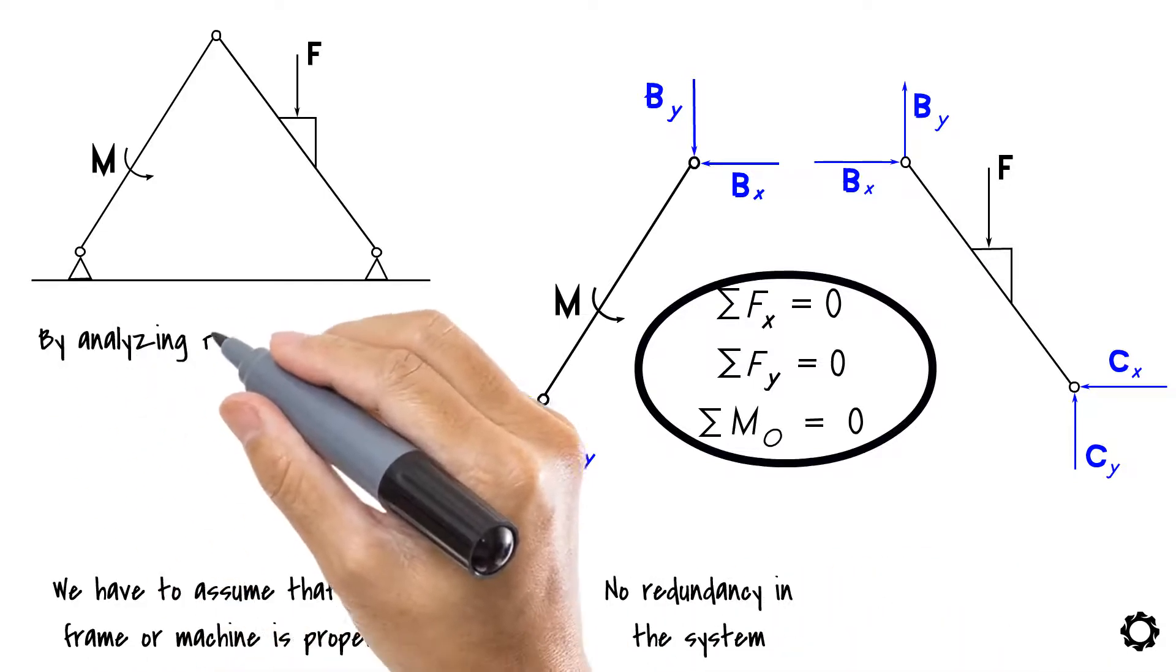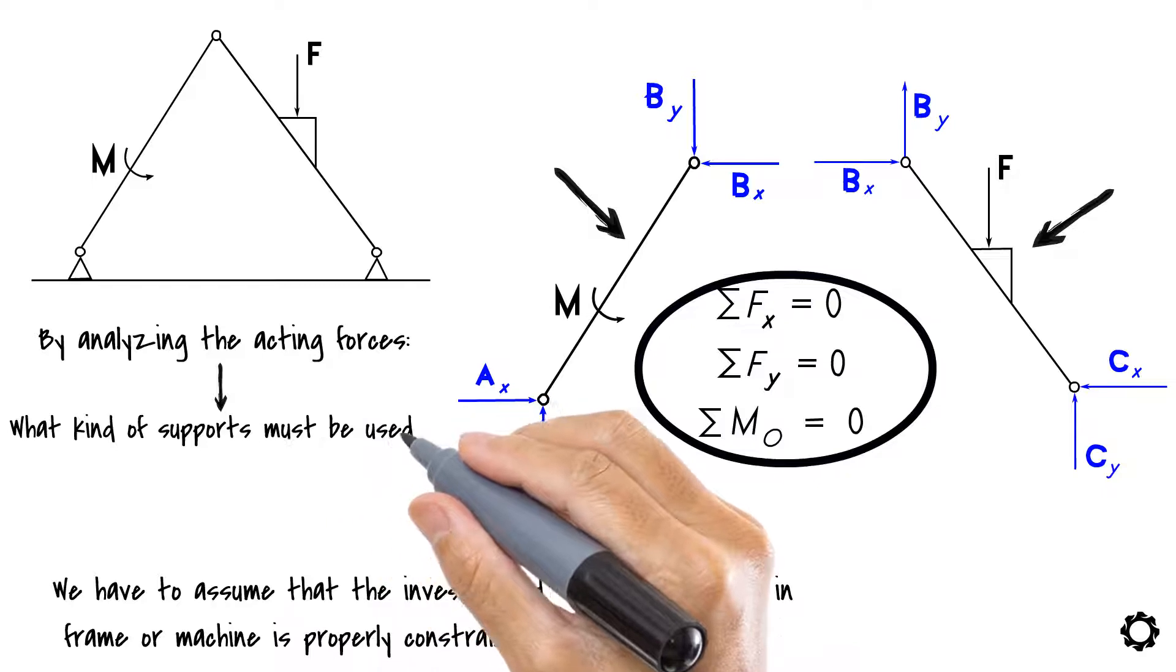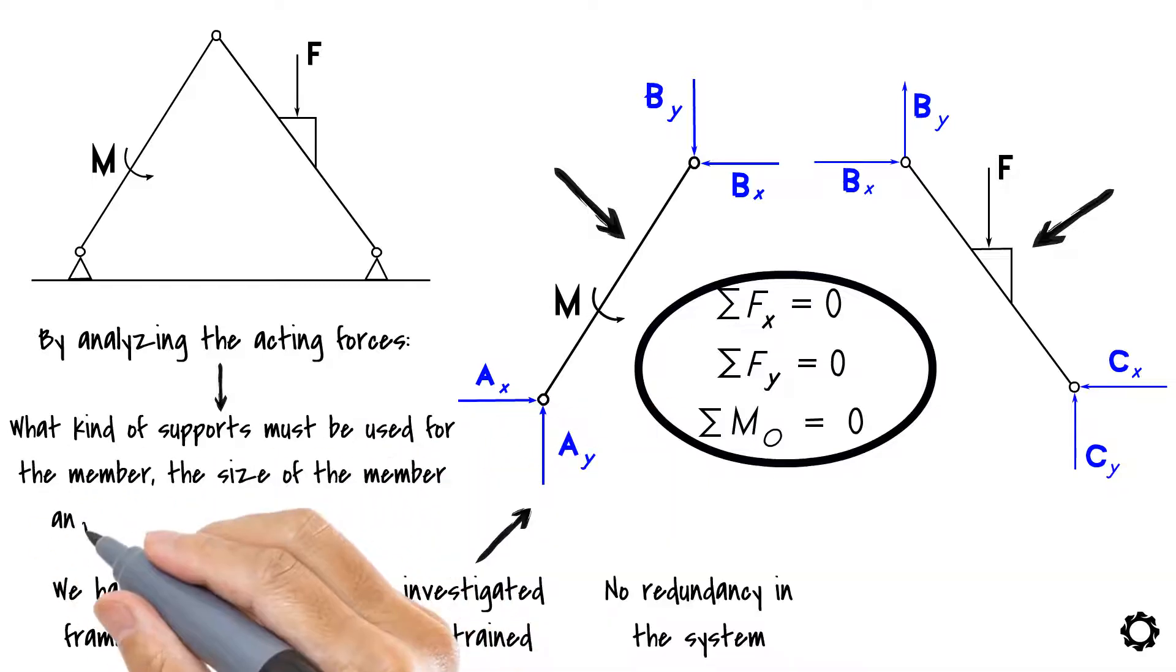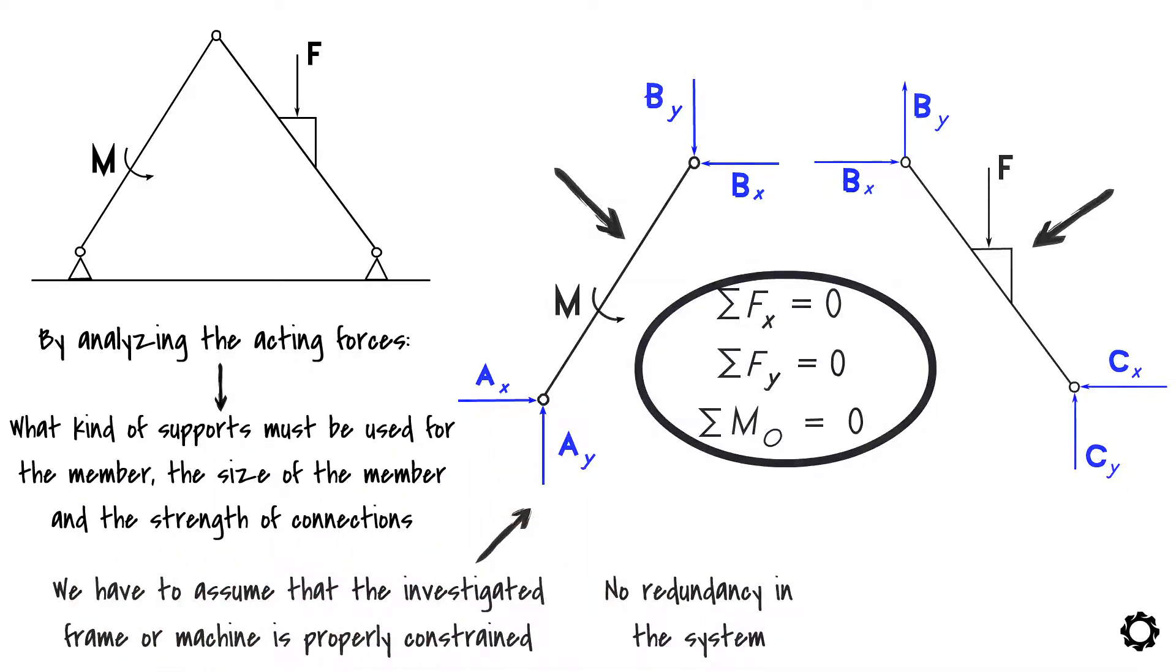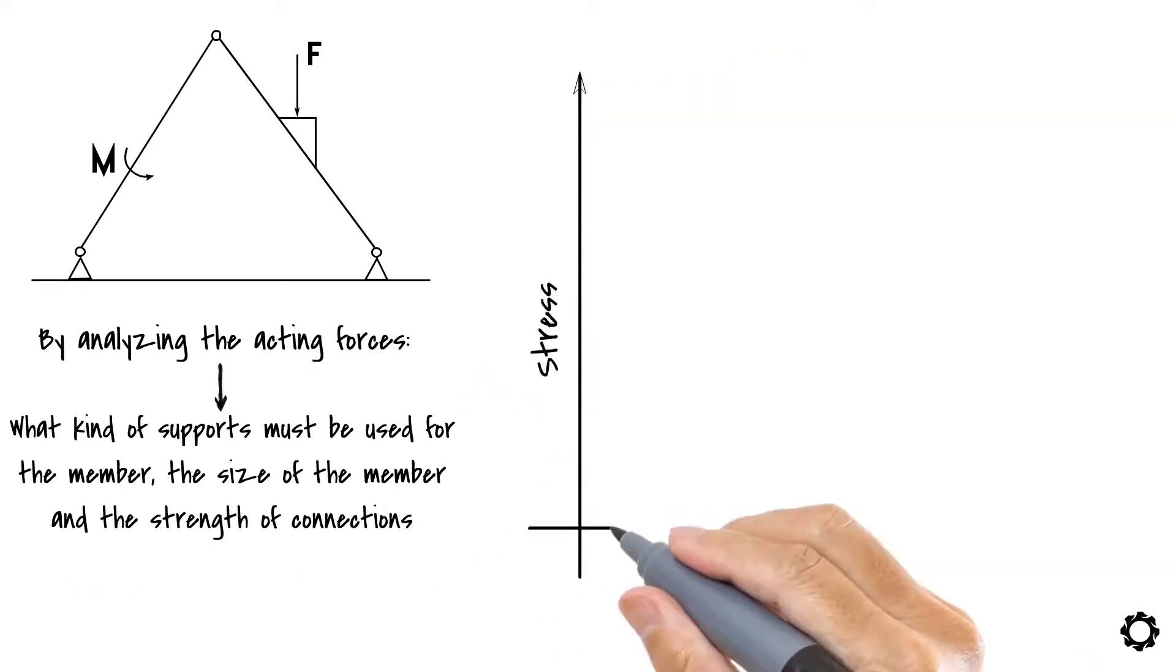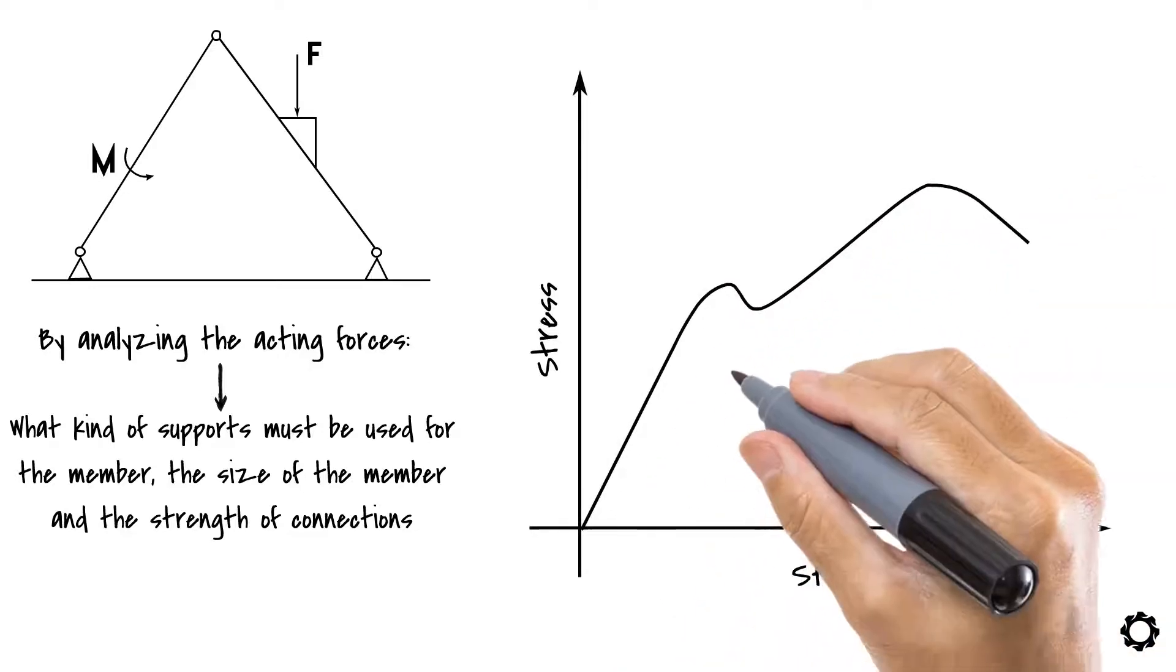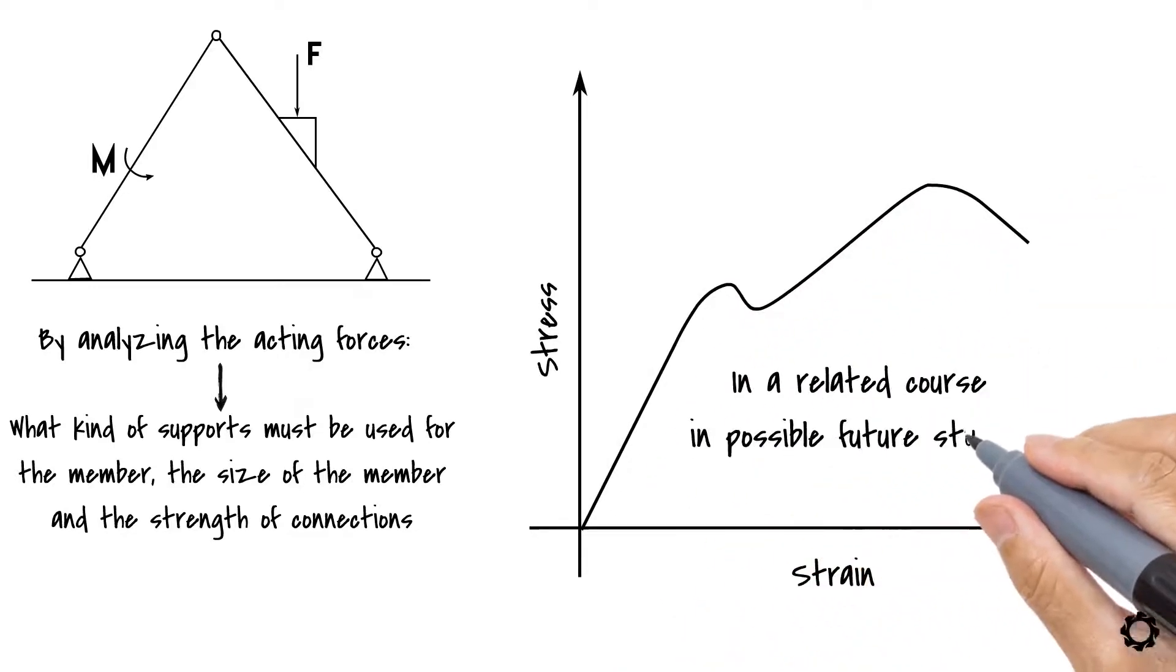By analyzing the acting forces in each member of the frame or machine, we can then design what kind of supports must be used for the member, the size of the member, and the strength of the connections. Depending on what we want to analyze from the structure, this may also require us to have some knowledge about the theory of mechanics of materials which you will learn about in a related course in possible future studies.